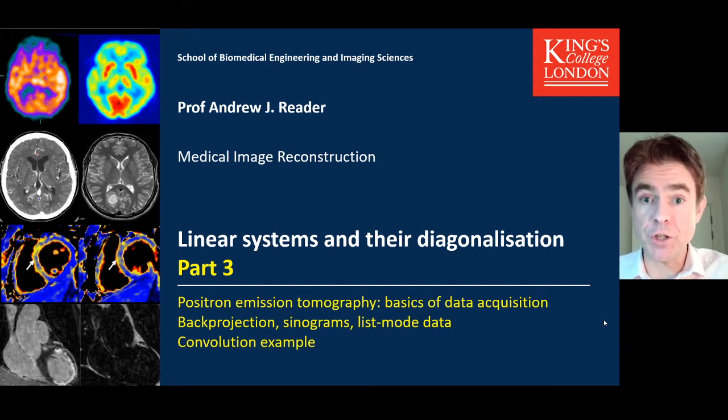This is part three of the lecture entitled linear systems and their diagonalization, where I'll be going into the basics of PET imaging, the data acquisition, back projection, sinograms, LISMO data, and the example of convolution. This is a motivating example for better understanding of linear systems and diagonalization.